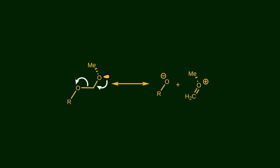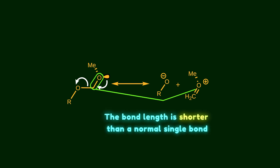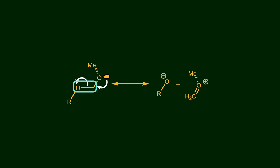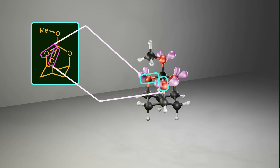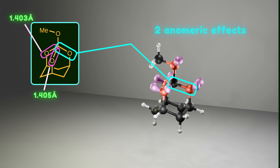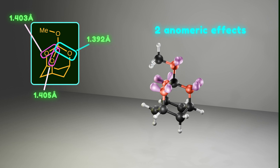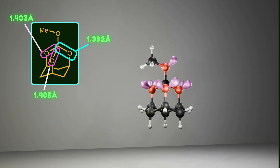Look at this resonance form which shows a simple model of the anomeric effect. The bond related to the donor group has partial double-bond character, so its bond length is shorter than a normal single bond. In the acceptor, the bond is weakened and shown as a broken bond, so it is longer than a normal single bond. The two endocyclic carbon-oxygen bonds with three anomeric interactions have almost equal lengths. The one with only two anomeric interactions is shorter than the other two endocyclic bonds. The three endocyclic oxygens are both donors and acceptors simultaneously, but the exocyclic oxygen is only a donor — there is no lone pair anti-periplanar to the exocyclic C-O bond — so this bond is shorter than all three endocyclic carbon-oxygen bonds.